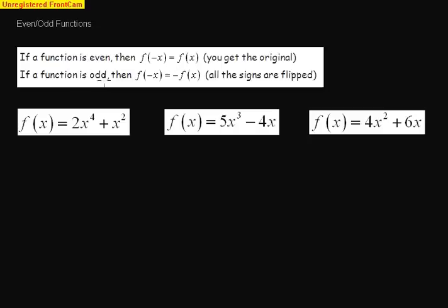If a function is odd, then evaluating it for f of negative x, you get the exact opposite of the original function, which in layman's terms means that all the signs have been flipped, all the positives are negatives, all the negatives are positives. So we have three examples here today.